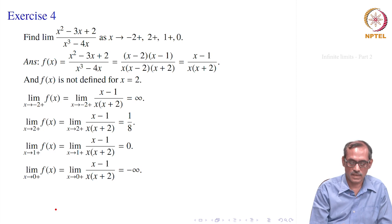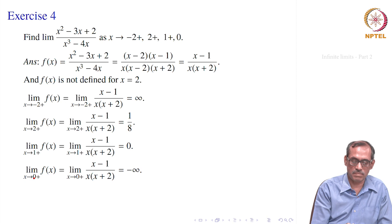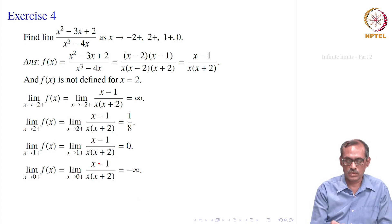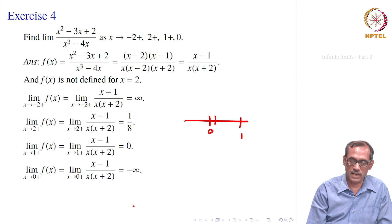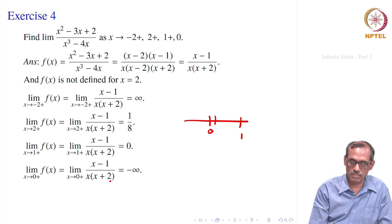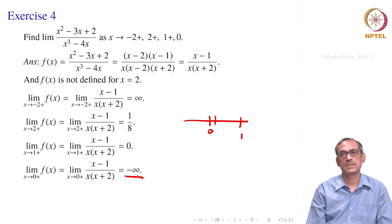For x → 0+, x is positive but near 0. Then x - 1 is negative, x is positive, x + 2 is positive. So the numerator x - 1 is negative and the denominator x(x+2) → 0+. The overall function is negative and diverges, giving limit = -∞.